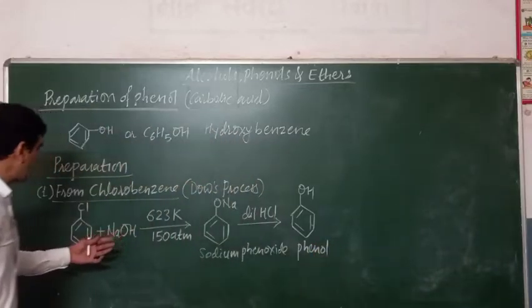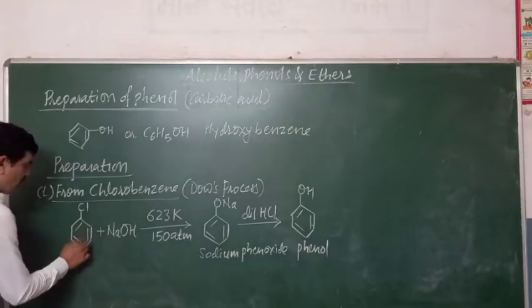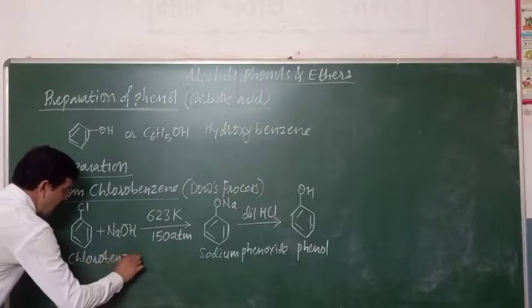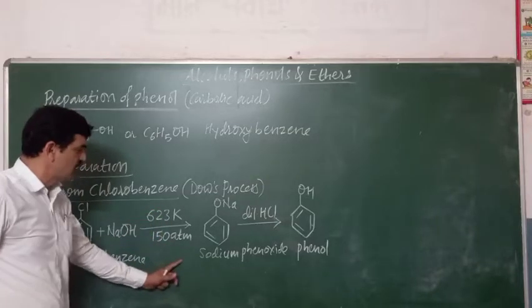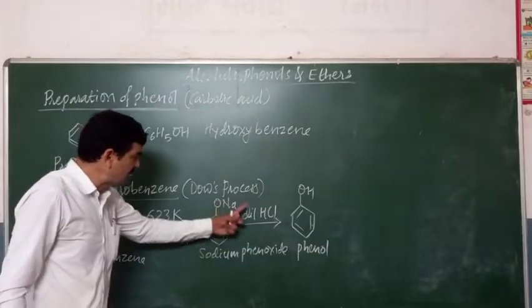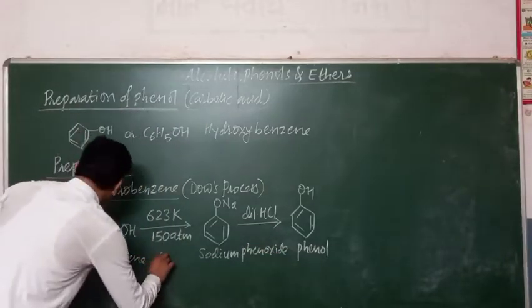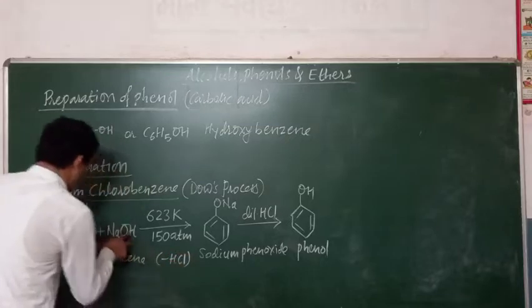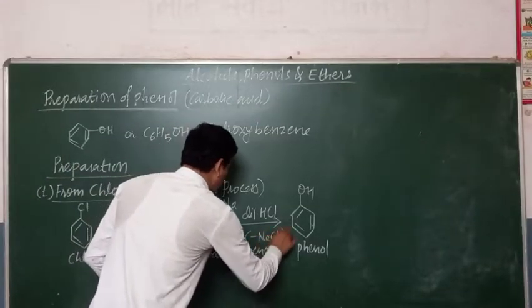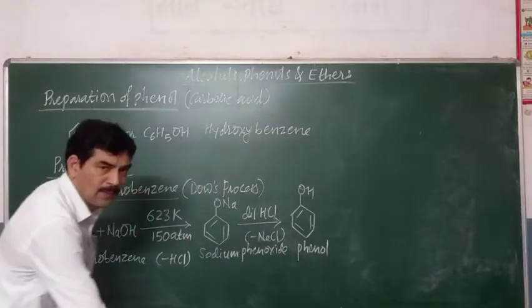So, two steps are there for the preparation of phenol from chlorobenzene. In the first step, chlorobenzene is reacted with NaOH at 623 Kelvin under a pressure of 150 atmospheres, with formation of sodium phenoxide. In the second step, sodium phenoxide is reacted with dilute HCl, then phenol is formed with removal of HCl and NaCl. This is Dow's process for the preparation of phenol.